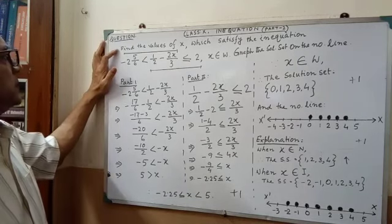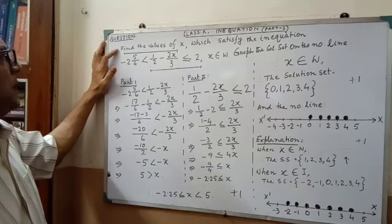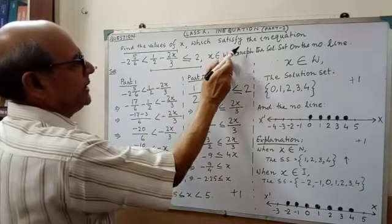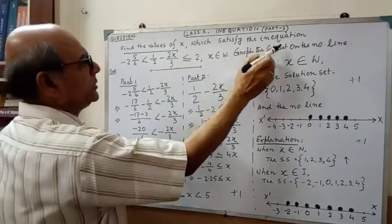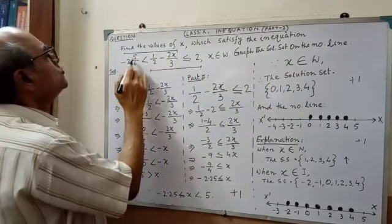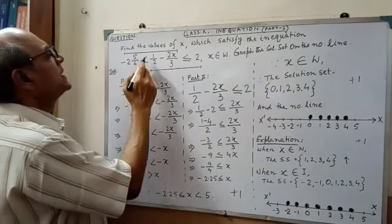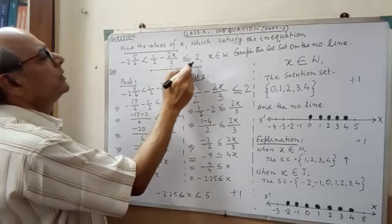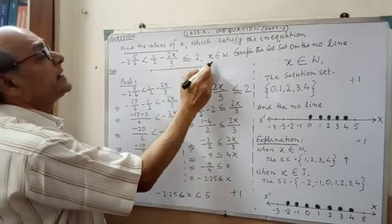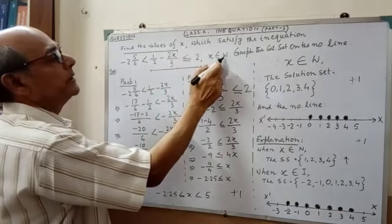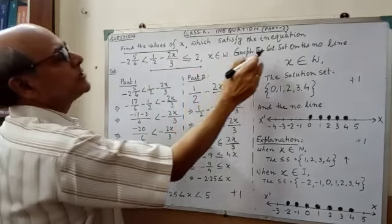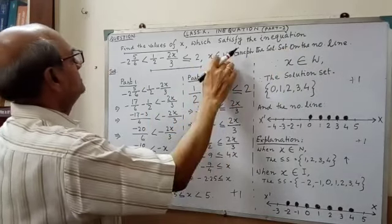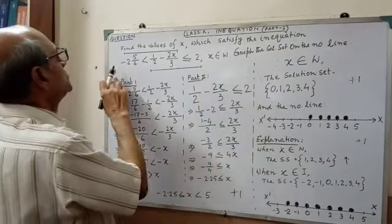Question given: find the values of x which satisfy the inequation. Minus 2, 5 by 6, less than half minus 2x by 3, less than equal to 2. x belongs to whole number. Graph the solution set on the number line. This is the sum and now the solution.